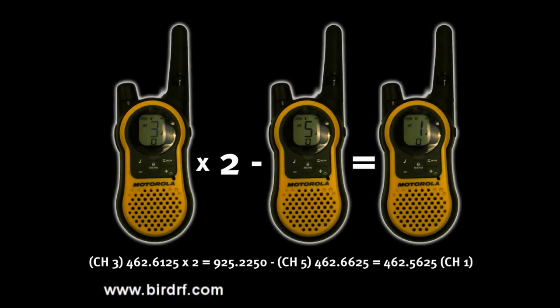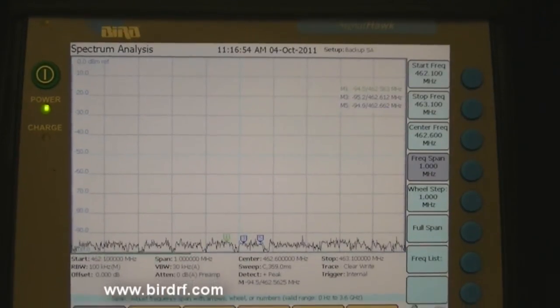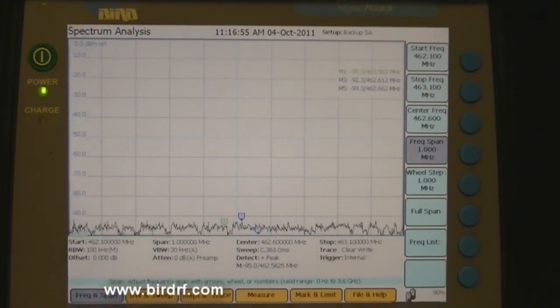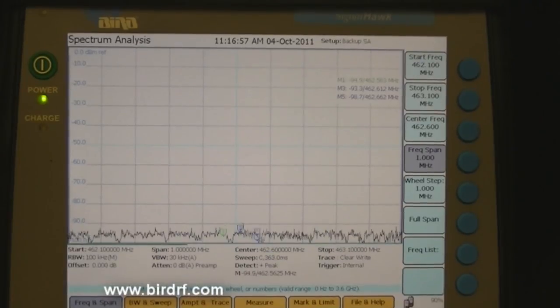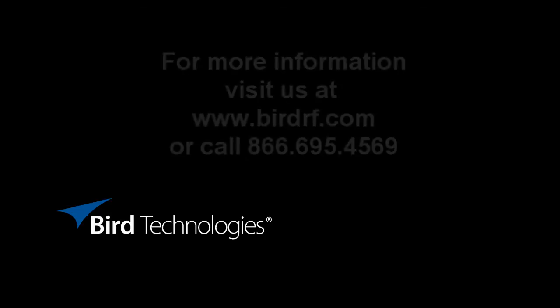Basically, the frequency of channel 3 and the frequency of channel 5, in the frequency domain, multiply and add or subtract. One of the resulting frequencies — which we call IM products — lands exactly on the channel 1 frequency. That's the squeak you just heard. And that is simply a demonstration of IM.